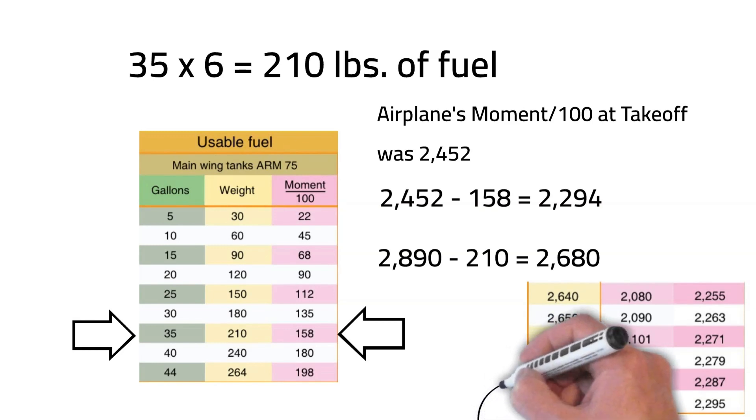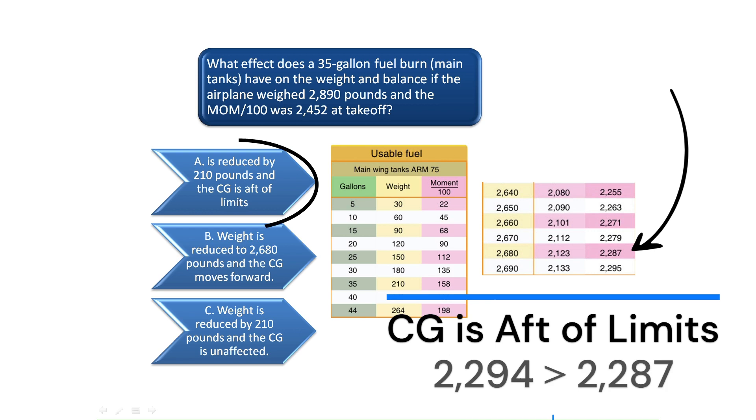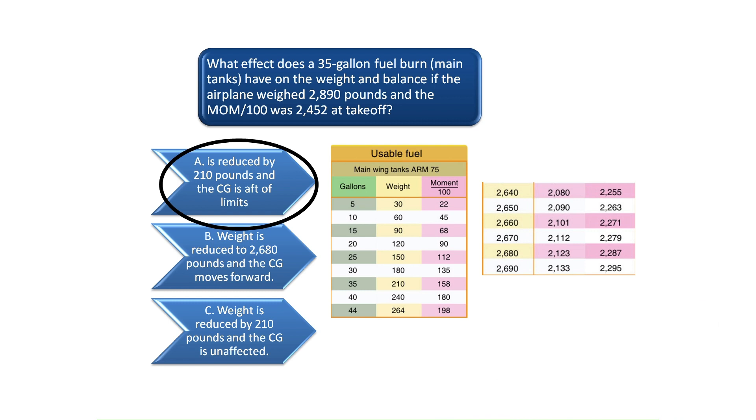Notice from the figure to the bottom right of the chart the aircraft's moment limits for a given weight. Since the aircraft is now 2,680 pounds, we can see the 35-gallon fuel burn would reduce the aircraft's weight by 210 pounds and the center of gravity, CG, is now aft of limits. Therefore, the correct answer to question 4 is A.